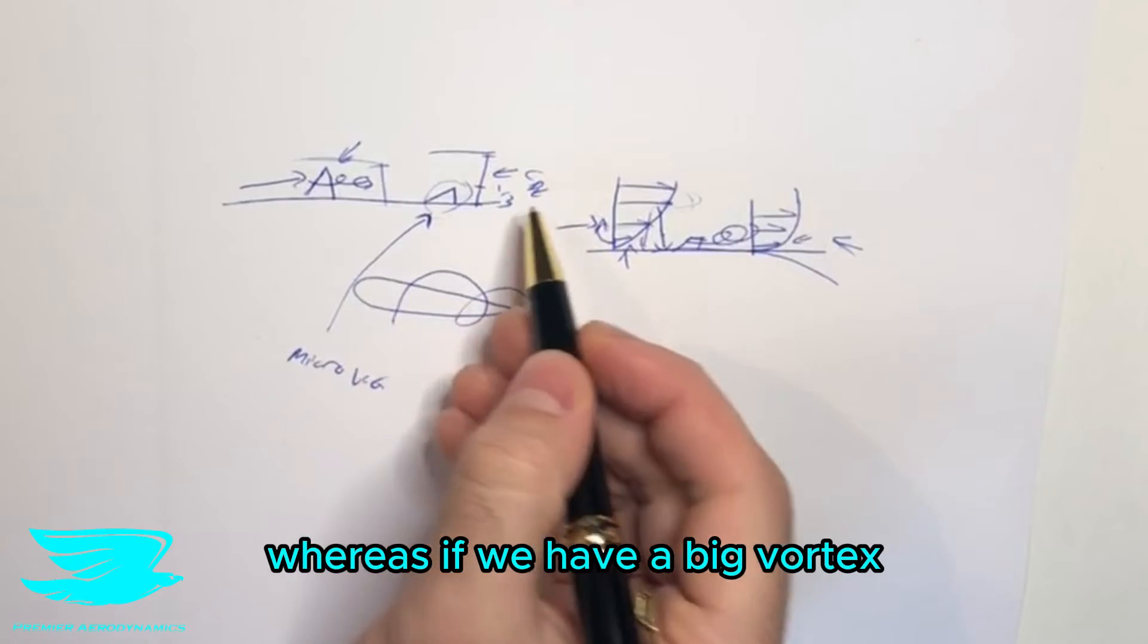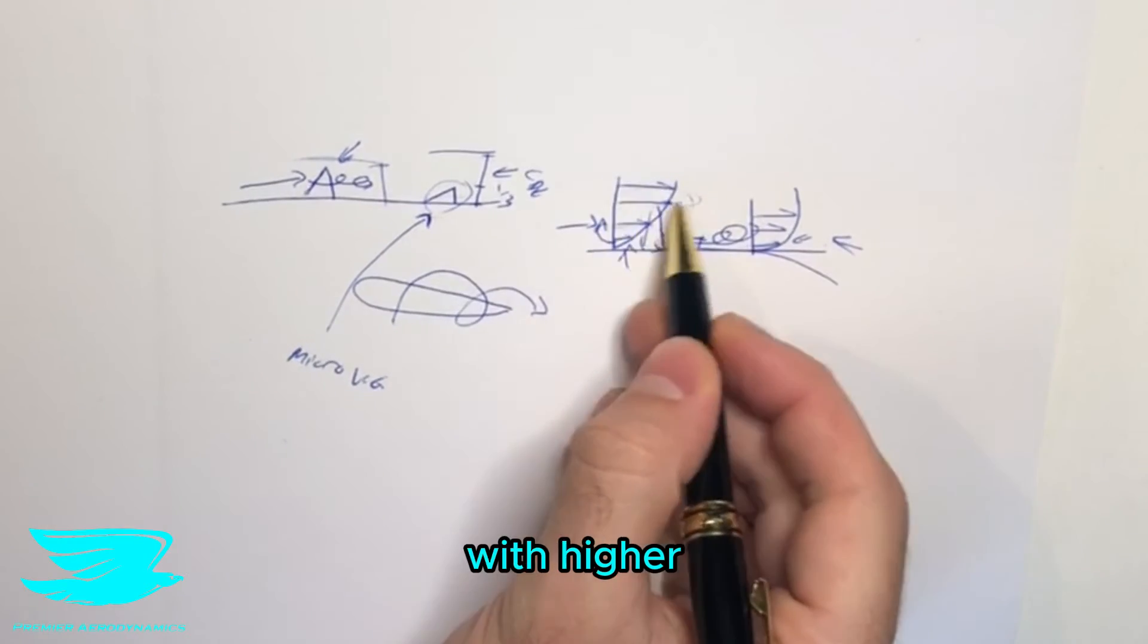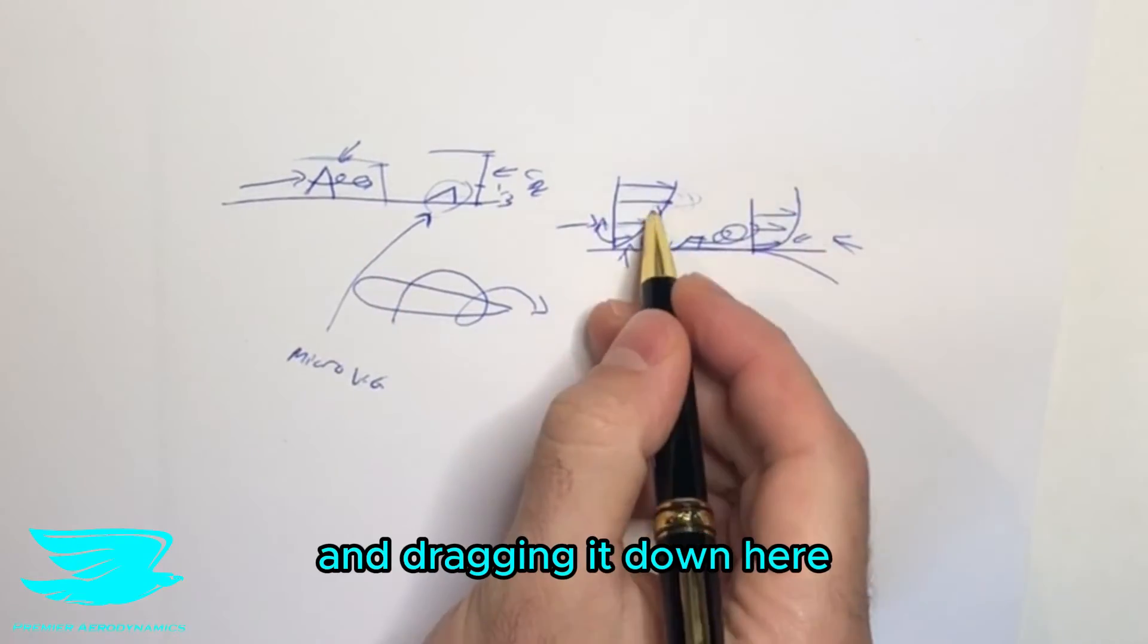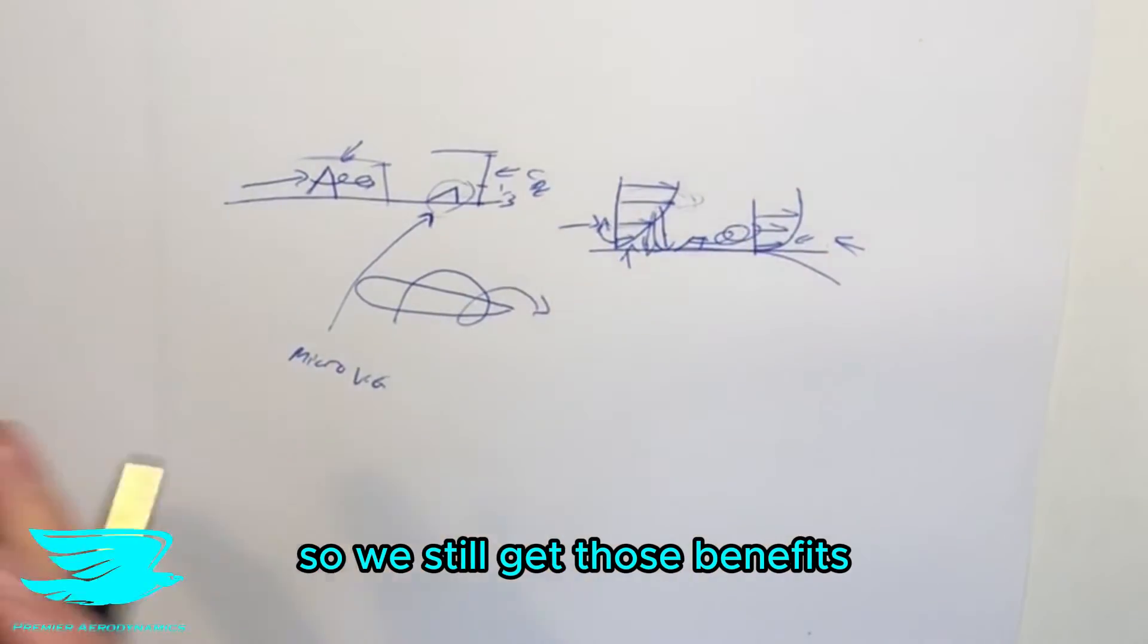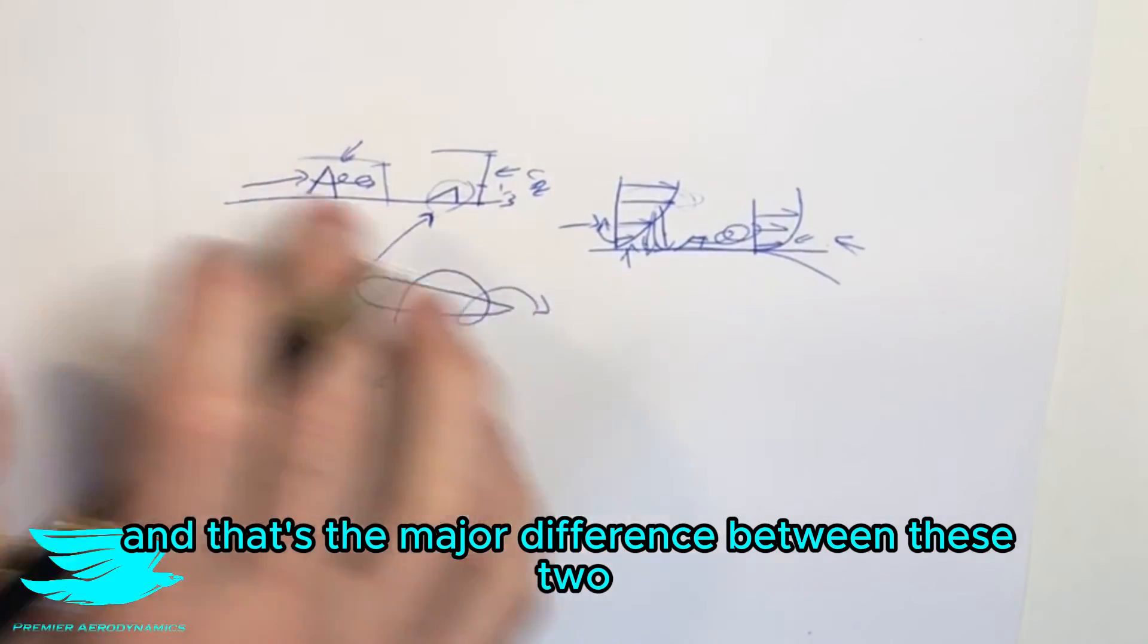Whereas if we have a big vortex coming off here, then even though this vortex generator is small, the vortex coming off of here is still mixing with this higher momentum fluid here and dragging it down here. So we still get those benefits of having this vortex generator without this drag penalty. And that's the major difference between these two.